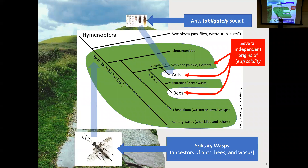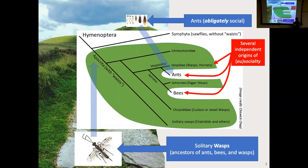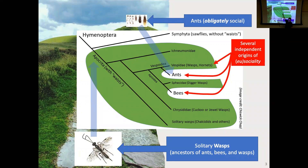All of these evolved from a solitary wasp like this little ichneumonid right here. Some of them are social and some of them aren't. Even though bees, wasps, and ants all have sociality, they didn't evolve from the same sociality. Bee sociality evolved independently of wasp sociality, which evolved independently from ant sociality — and within bees and wasps there are also different origins of sociality. But there are only social ants — that's why we call them obligately social. There's no solitary ant. What we're really talking about is something that evolved from a solitary insect, but now does all the solitary jobs across a group.